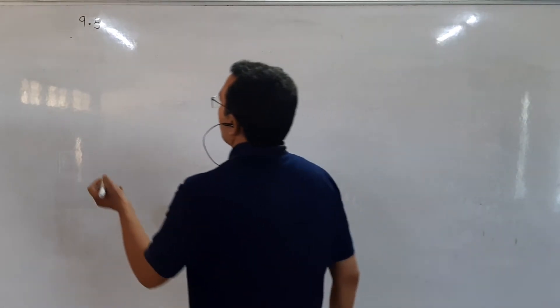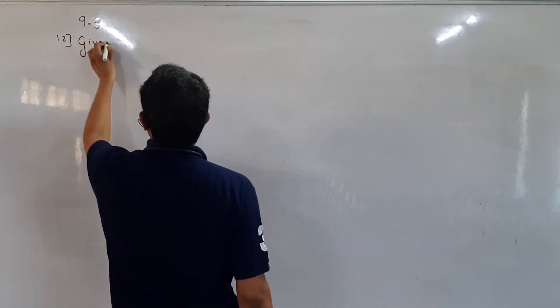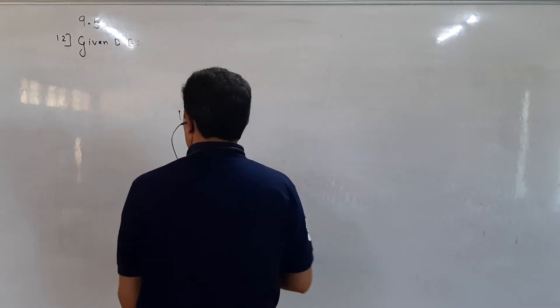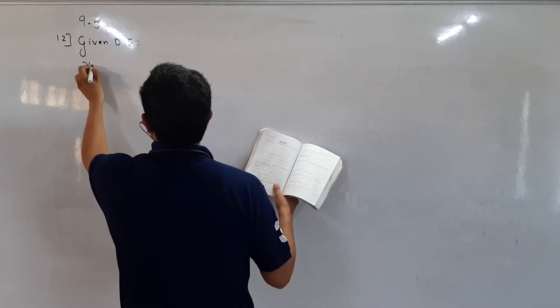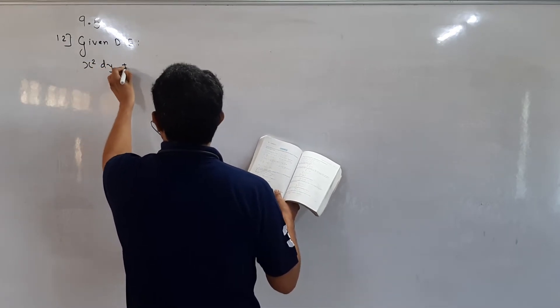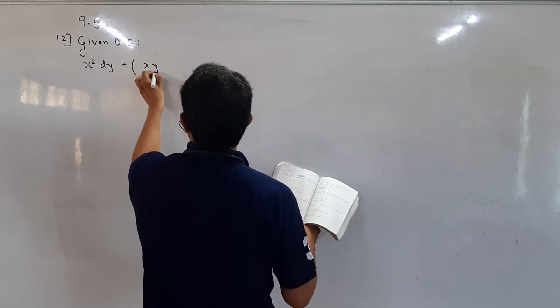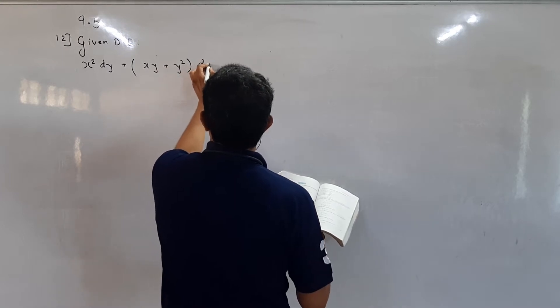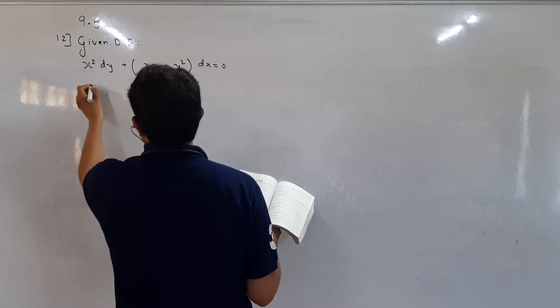Good morning, Jaisam and my students. Today we are going to start with sum number 12 of exercise 9.5. The given differential equation is x squared dy plus xy plus y squared dx is equal to 0, with initial condition when x is 1, y is 1.